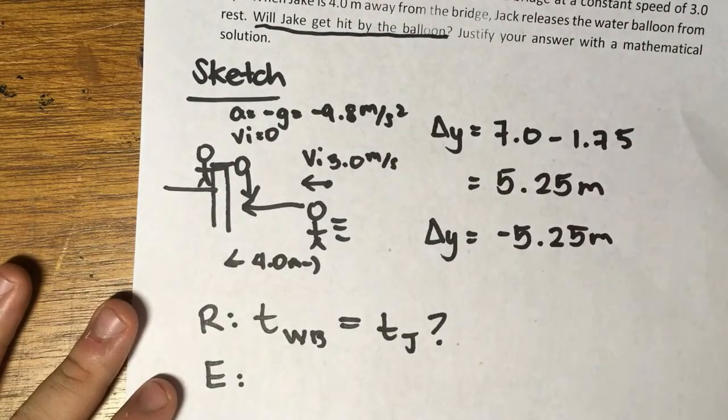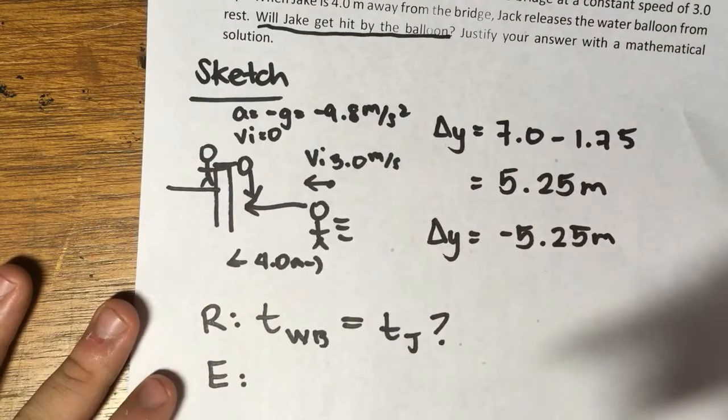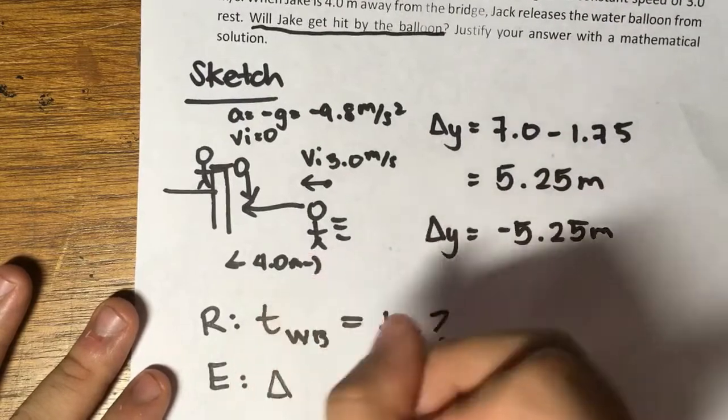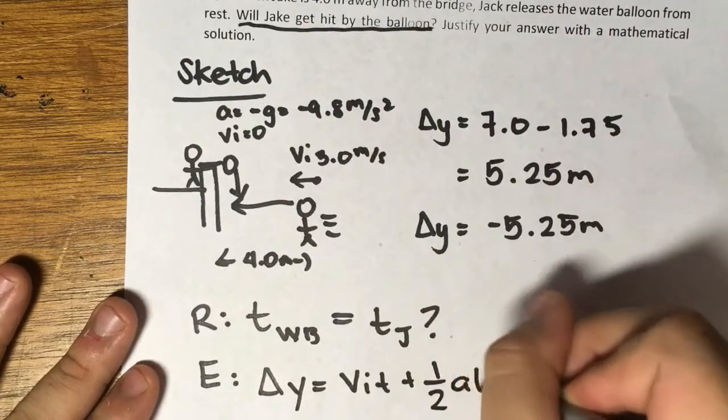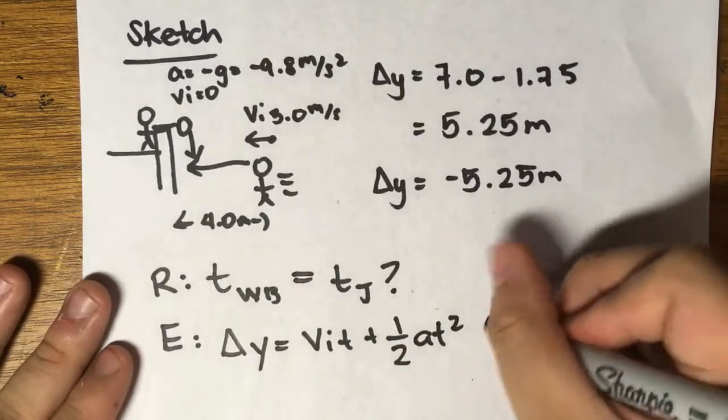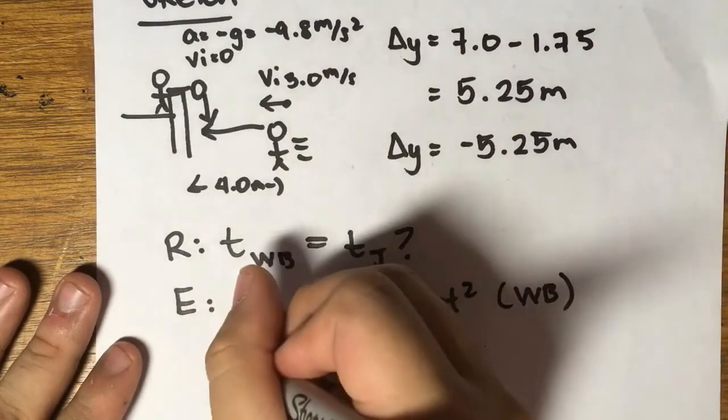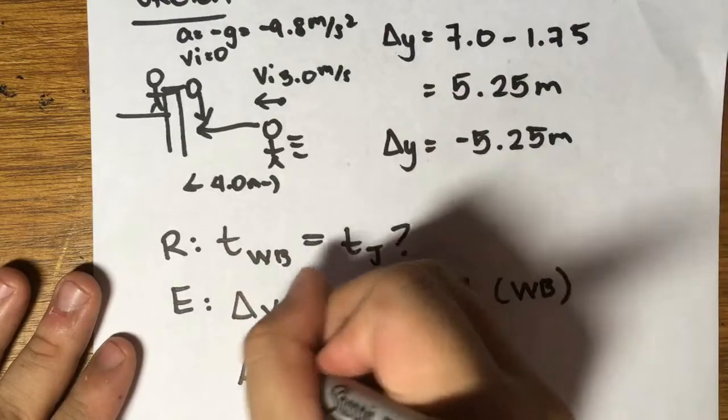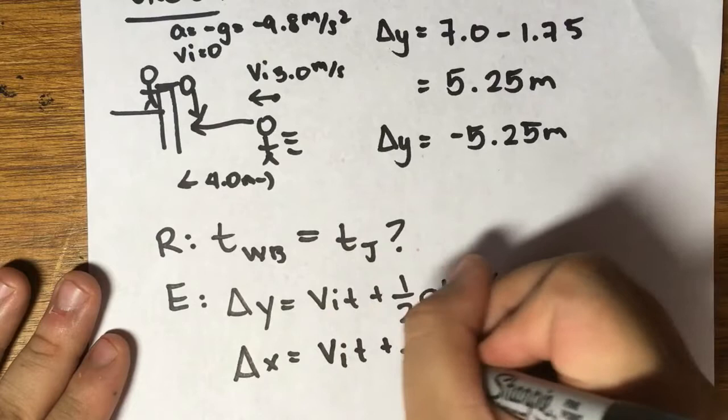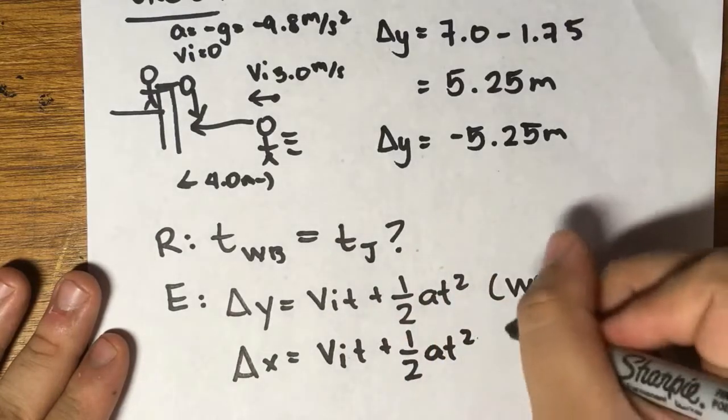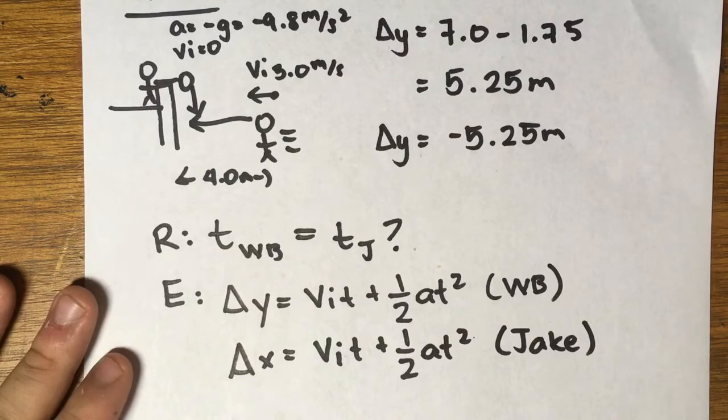What equation can we then use for this situation? I think we will use the same equation because in both cases we're given vi, we're given displacement, we're given acceleration. So we're going to use delta y equals vit plus one-half at squared. This is for the water balloon. And for Jake, because he's moving in the x direction, let's go back and go with delta x, so that's vit plus one-half at squared for Jake.